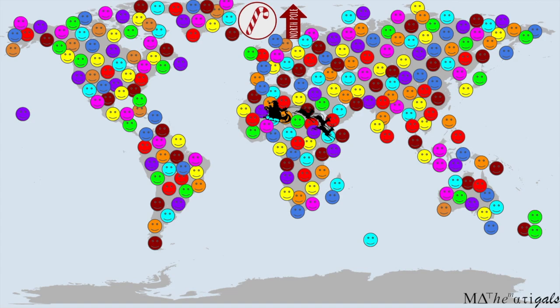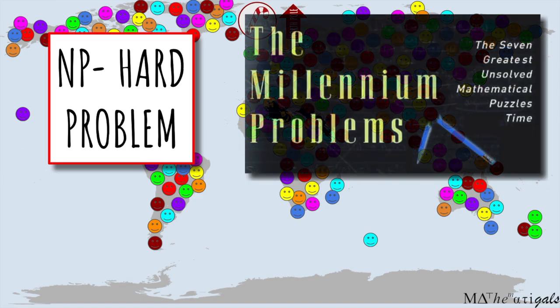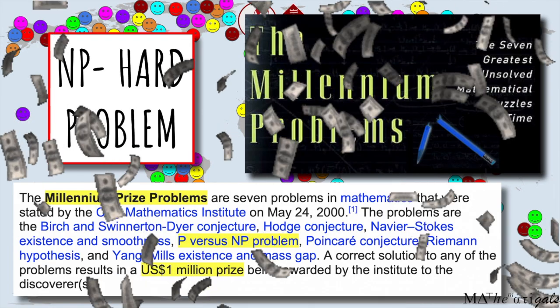This present delivery problem that Santa faces every year is also called the travelling salesman problem and is in fact part of a whole class of problems called NP-hard. The NP-hard problem is one of the seven millennium problems. And if someone is able to solve it, they will be awarded one million dollars.